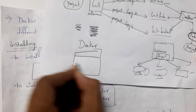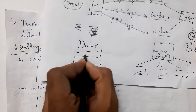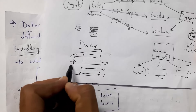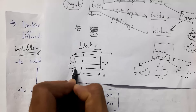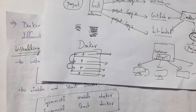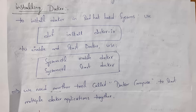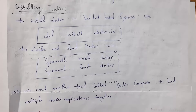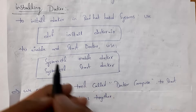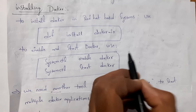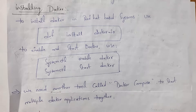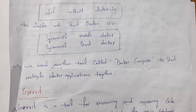In Docker software, there will be multiple containers, and in each container we can place one project. Each container is independent of the others, so each container will work independently. In order to install Docker in Red Hat-based systems, you need to use the command: dnf install docker-io. To enable Docker: systemctl enable docker. To start Docker: systemctl start docker. There is also another tool called Docker Compose, which allows you to run multiple Docker applications together.